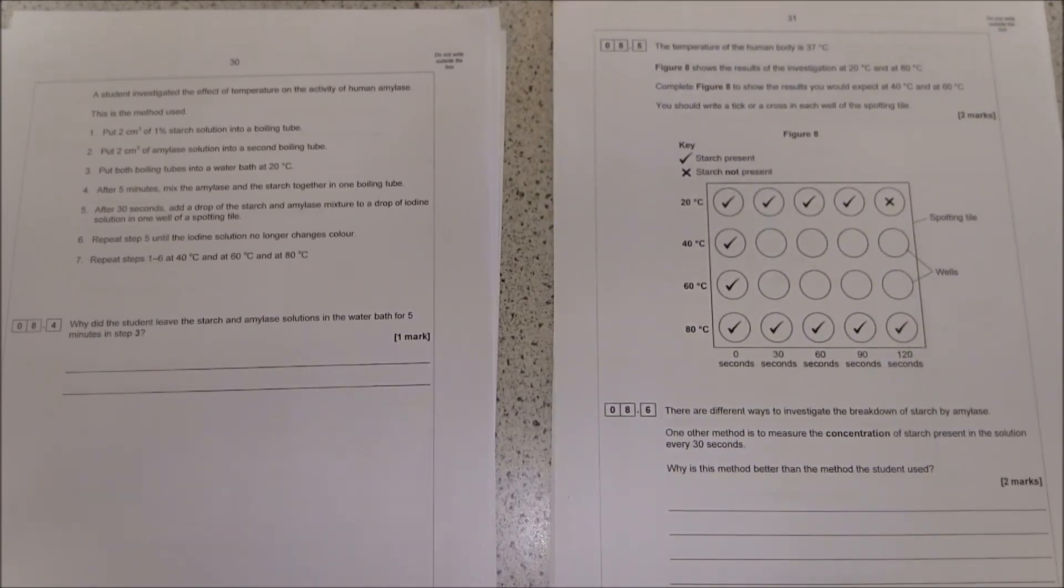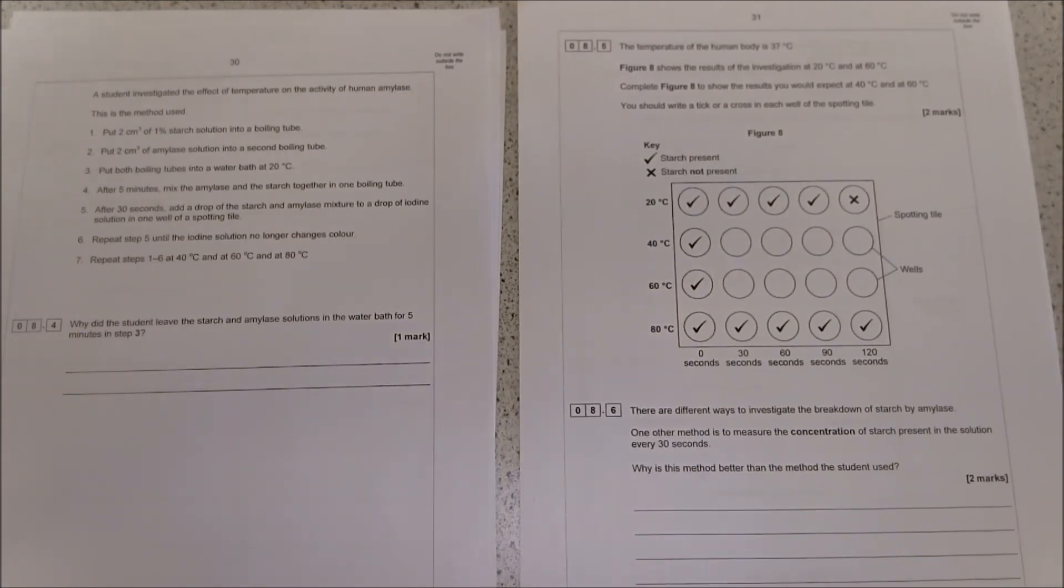It goes on to say there are different ways to investigate the breakdown of starch by amylase. One other method is to measure the concentration of starch present in the solution every 30 seconds. Why is this method better than the one the students used? This is all about precision and accuracy. If you're physically measuring the amount of starch still present, it's not subjective. One person might think there's a color change, one person might think there's no color change, so it gets around that problem.